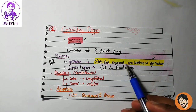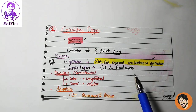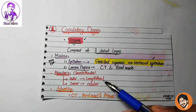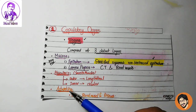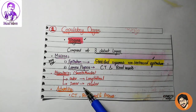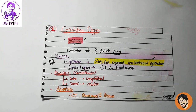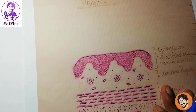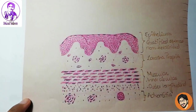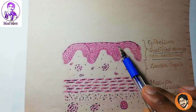So stratified squamous non-keratinized epithelium, connective tissue, and blood vessels are in the lamina propria. The muscularis is inner circular and outer longitudinal. Adventitia is present here because the vagina is in the pelvic cavity, not the abdominal cavity — that's why adventitia and not serosa. This is a handmade diagram drawn by someone else. Let's study stratified squamous non-keratinized epithelium.